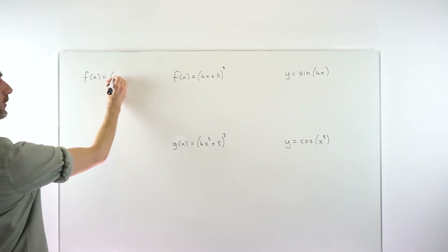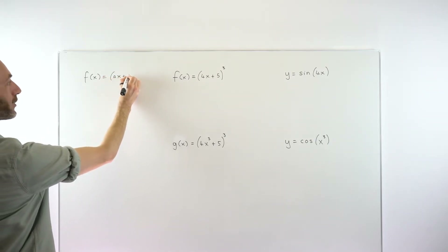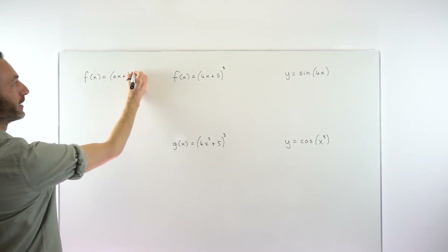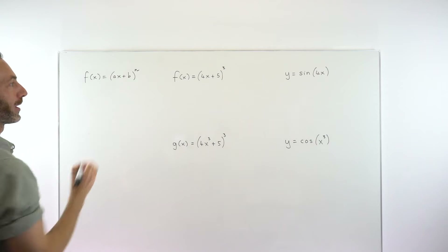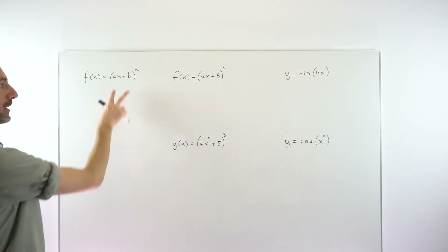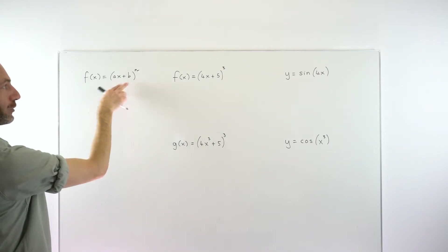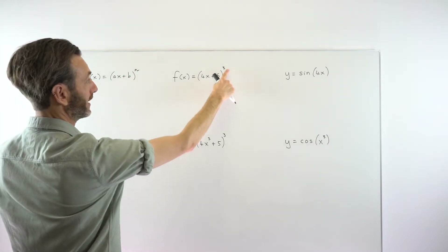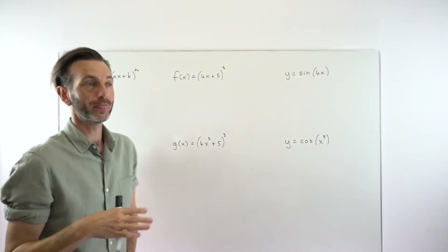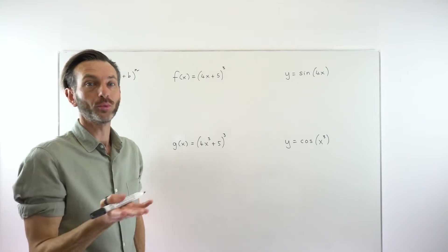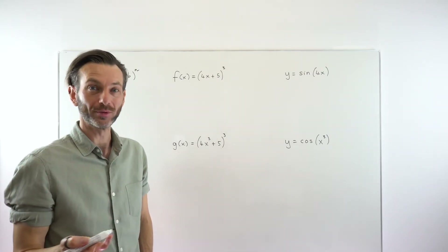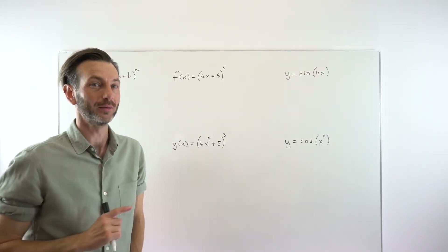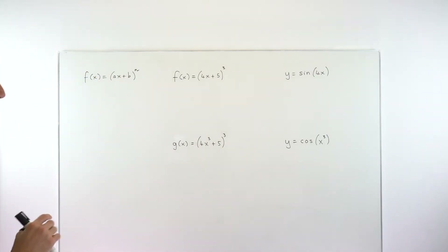Students will often learn that if you've got a function in the form ax plus b — something like a number times x plus a number inside a bracket with a power — they'll learn that that is when you use the chain rule. And it certainly is, but it's only one type of scenario in which you would use the chain rule.